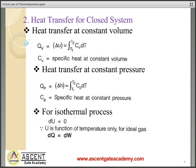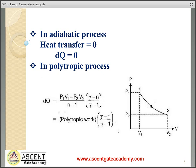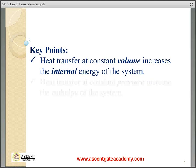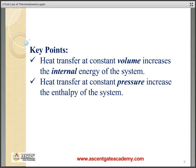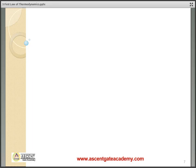For an isothermal process, the change in internal energy dU is equal to zero, so dQ equals dW. In an adiabatic process, heat transfer dQ equals zero. In a polytropic process, heat transfer dQ equals (γ − n)/(γ − 1) multiplied by work transfer, and work done is (P1V1 − P2V2)/(n − 1). Key points: heat transfer at constant volume increases the internal energy; heat transfer at constant pressure increases the enthalpy; in a polytropic process, heat transfer is not zero.